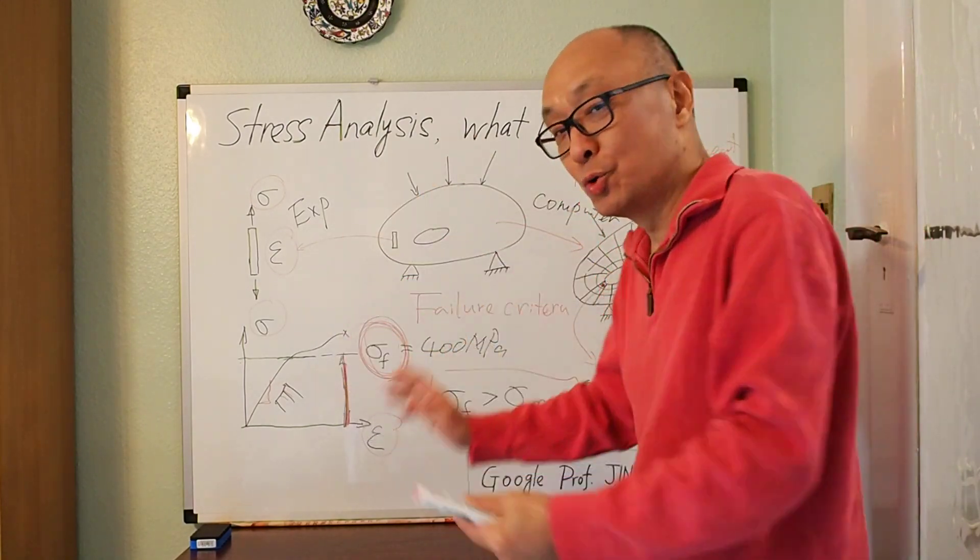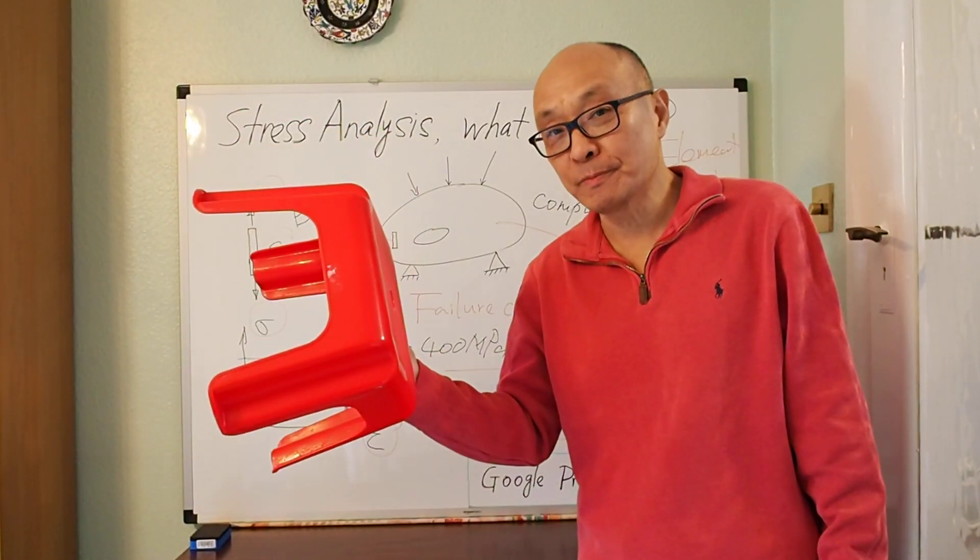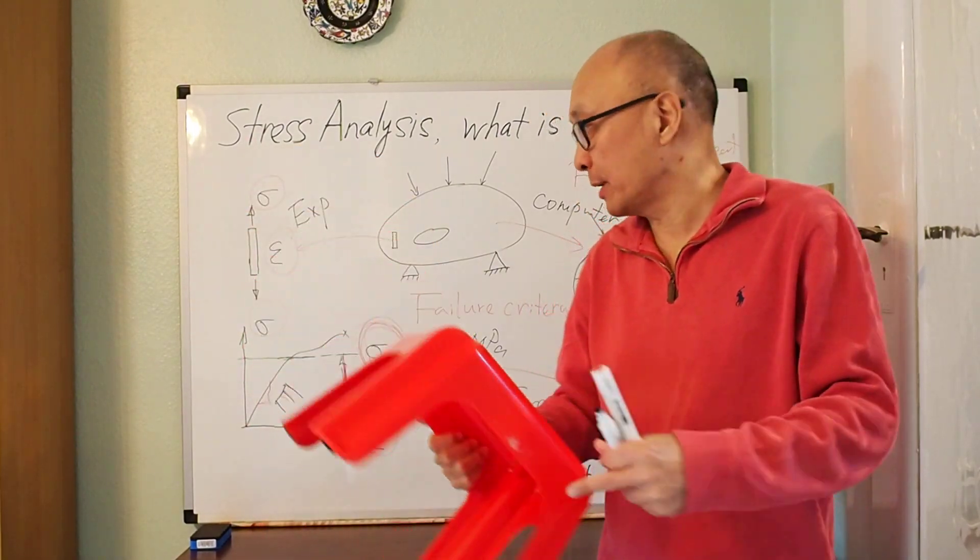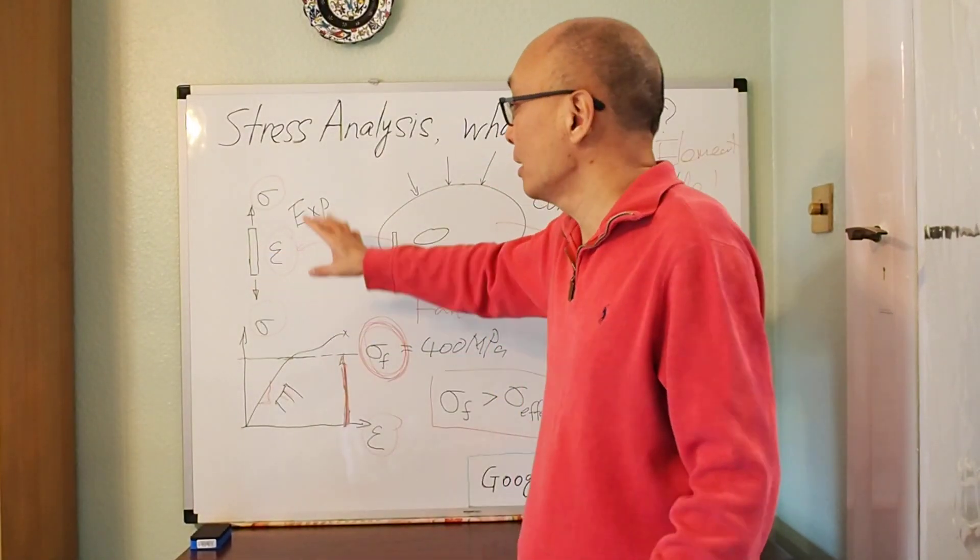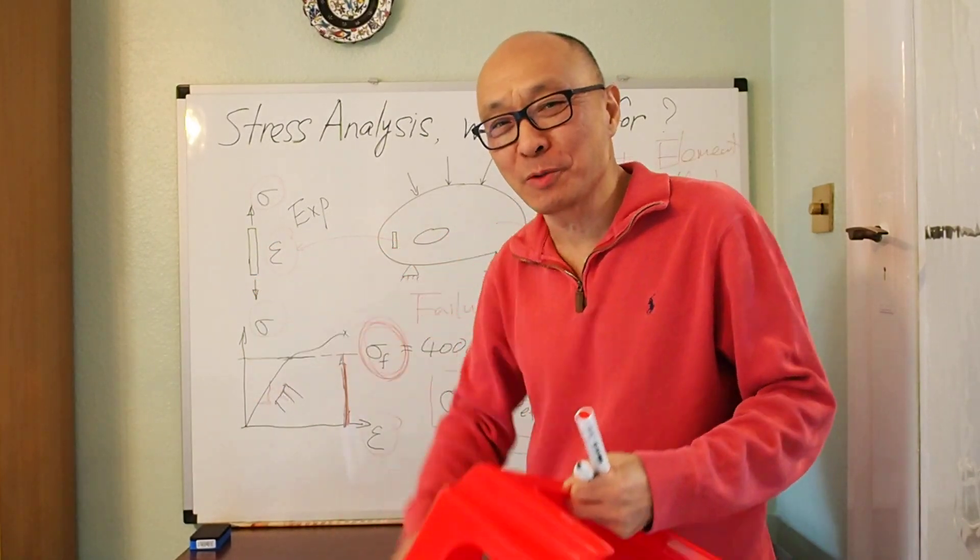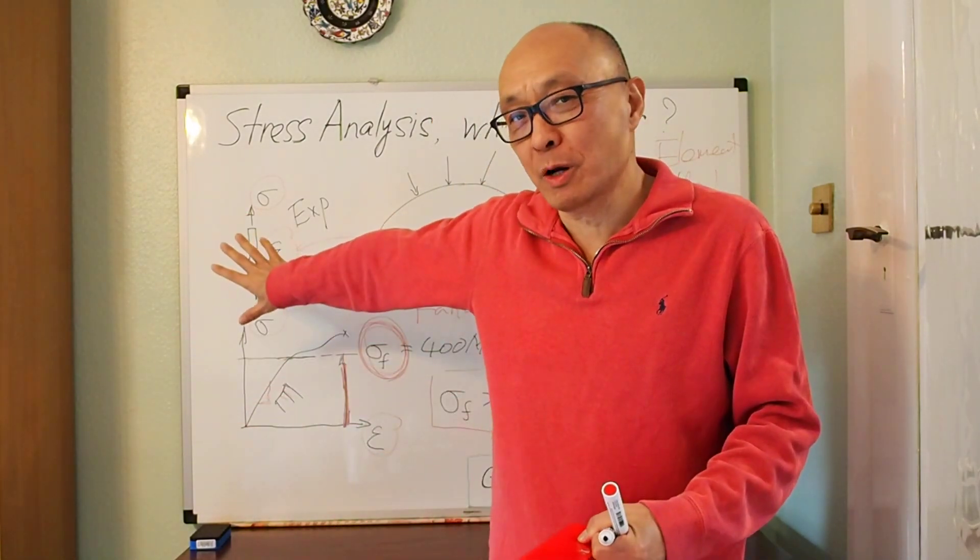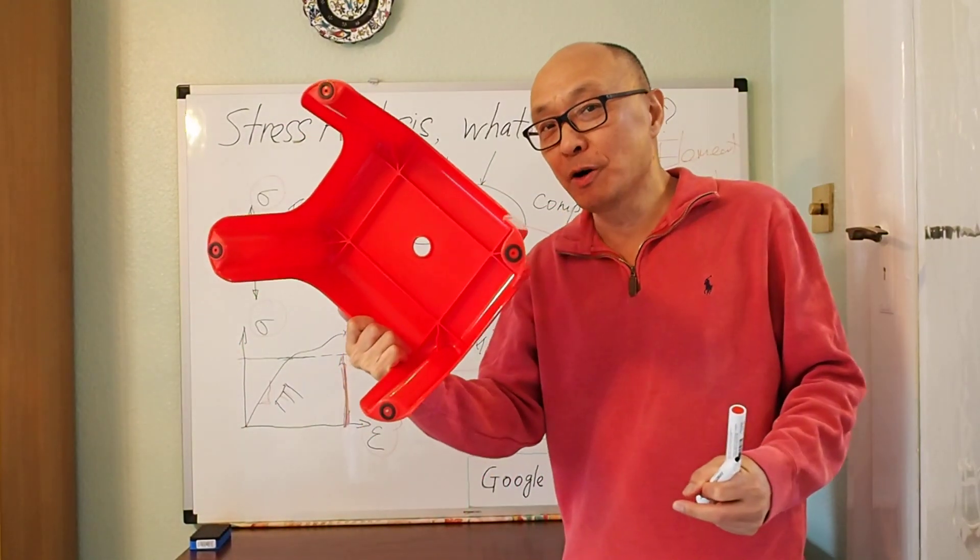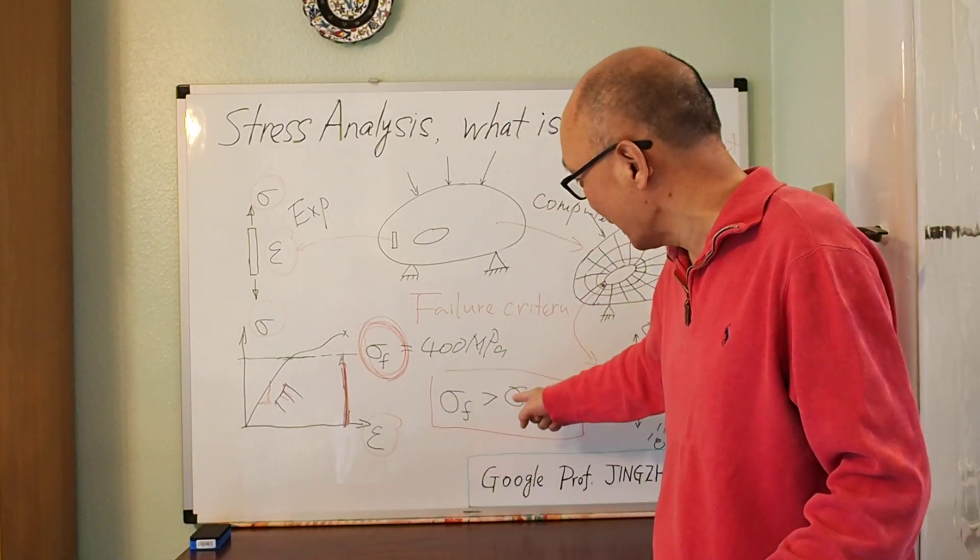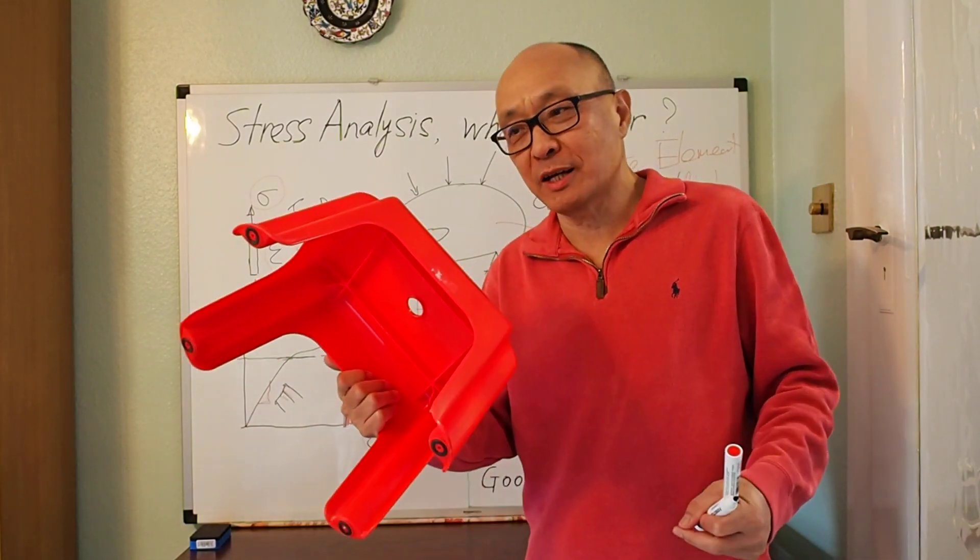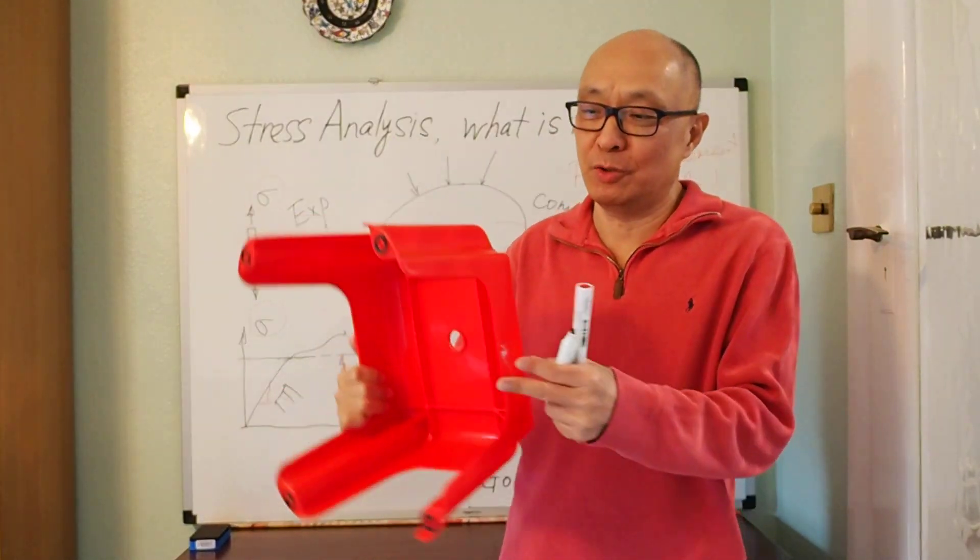So that is what stress analysis is all about. It involves these different elements. You do experiment, you do computational model, you make a judgment. And pull this all together, you can design that. You follow this logic, and you design the step stool without a single trial and error experiment. Because this is the data you need. You do that experiment on the plastic, and then you have that. Sometimes the manufacturer tell you this data, the supplier, or the people who sell the plastic to you, they tell you what are the Young's modulus and the strength. So you don't even need to do that experiment. Once you have that, you have a computer model of this step stool.